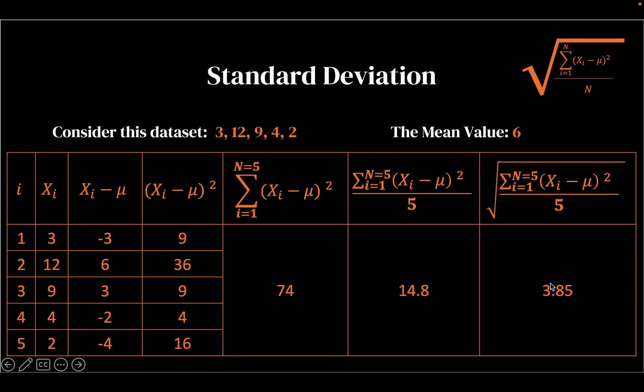So what does this really mean? This means that although the mean is six, if we have 3.85, which is 9.85, and if we go one standard deviation below the mean, that would be 2.15. So from 2.15 to 9.85, in this interval, we should expect 68% of the values in the data set to be there. So that is what the standard deviation really means.